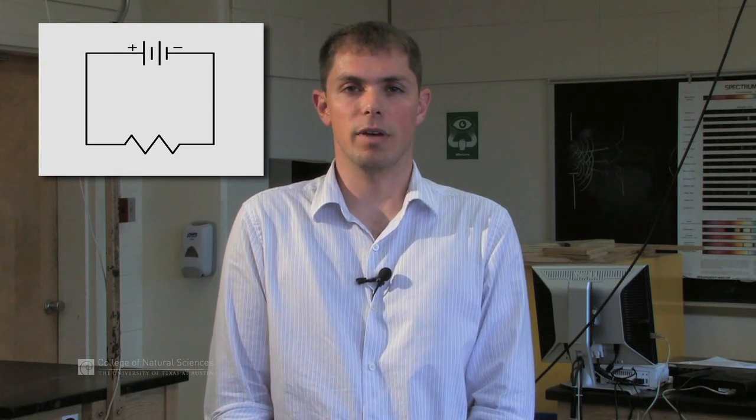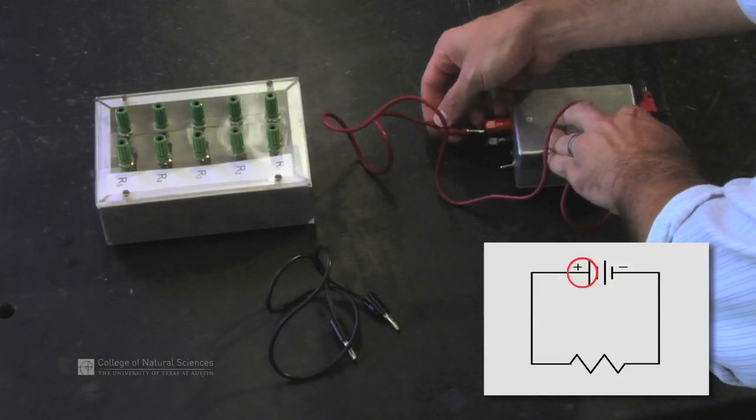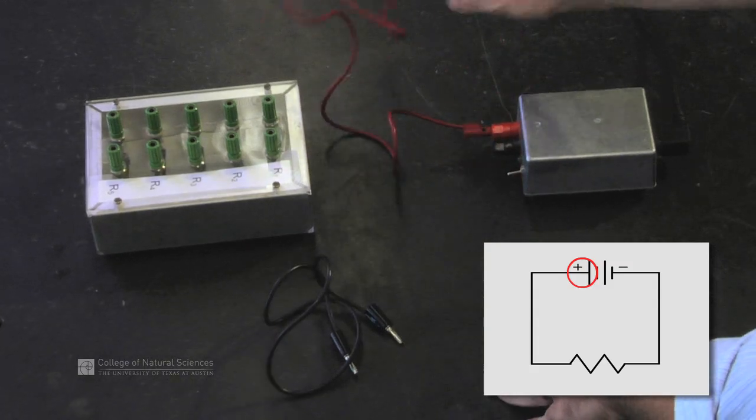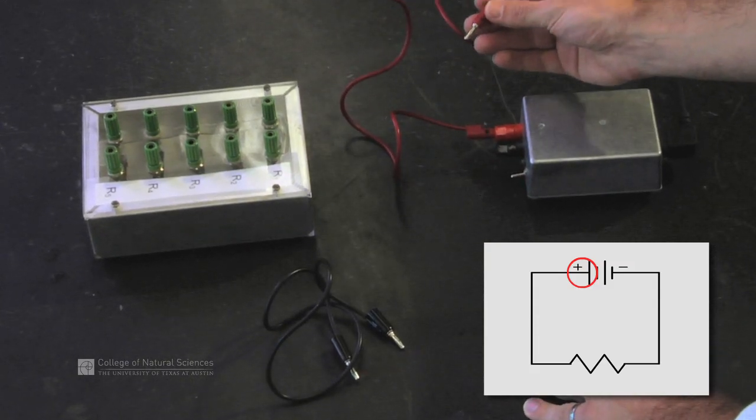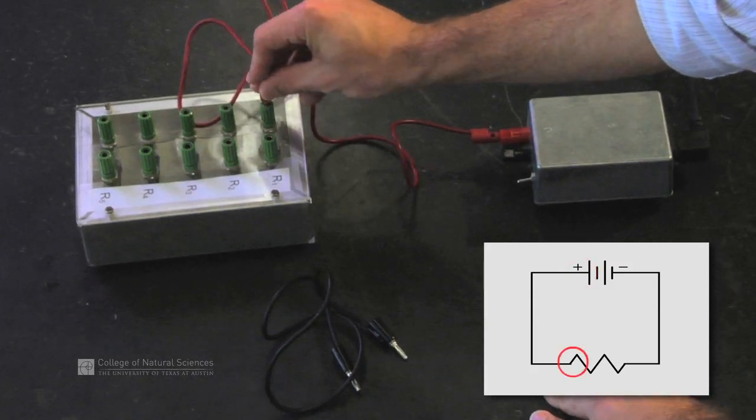We check the circuit diagram and see that the power supply is connected to a wire. So we connect the positive terminal from the power supply to a wire. We take that wire and connect it to the resistor as the circuit diagram dictates.